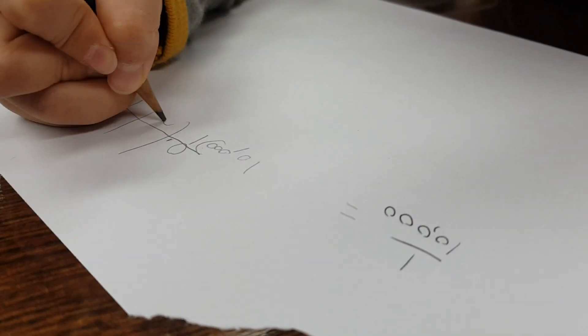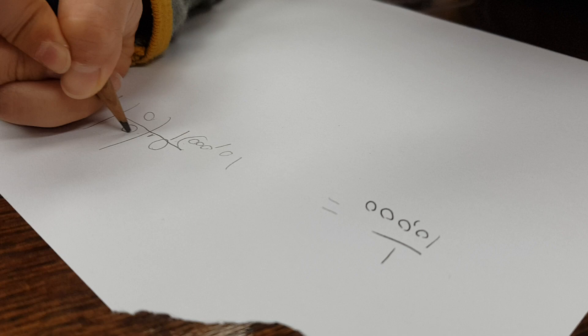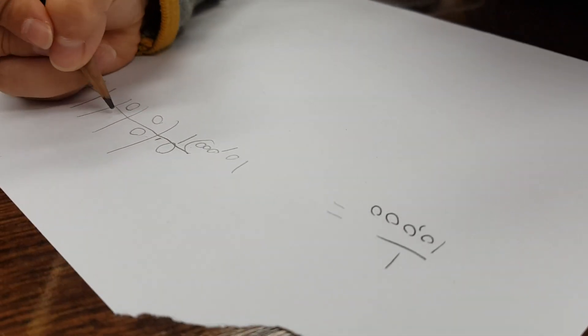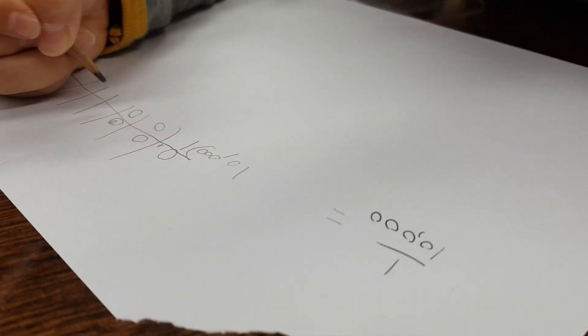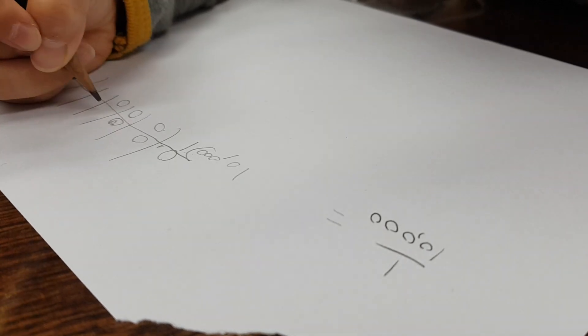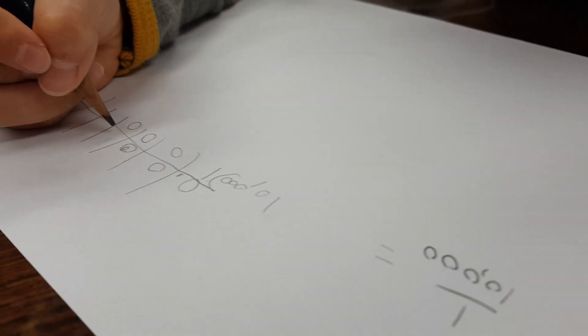I kinda want zero. Any 10,000s in 10? Zero. Yeah. 10,000s in 10,000s? Are there any 10,000 in 1,000? No.